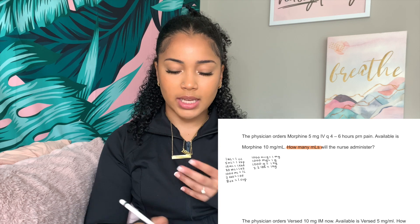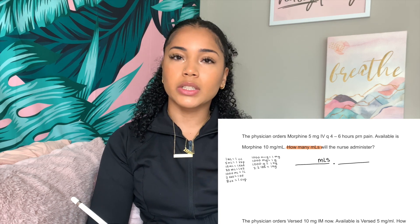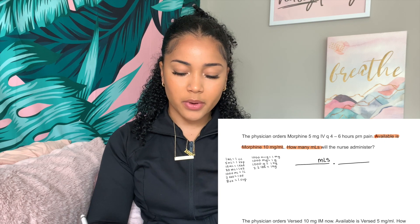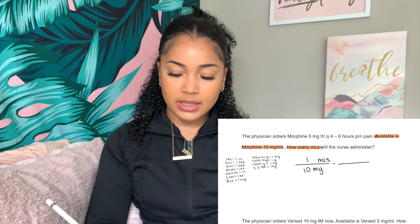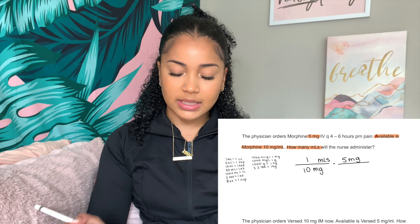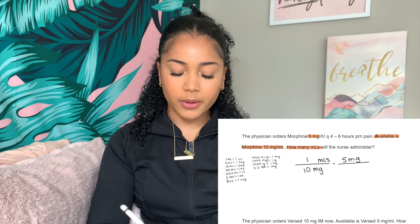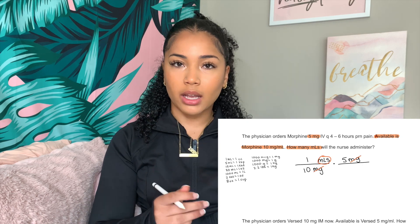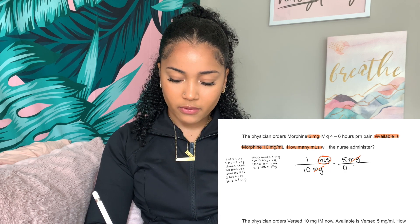We're looking for milliliters, so I put milliliters at the top of my table. Available is 10 milligrams per milliliter, so I fill in: one milliliter is 10 milligrams. I say it out loud: one milliliter is 10 milligrams, so how many milliliters are in five milligrams? We set up the table so milligrams cancel out and we're left with milliliters. Into the calculator: one over ten times five, and the answer is 0.5 milliliters.